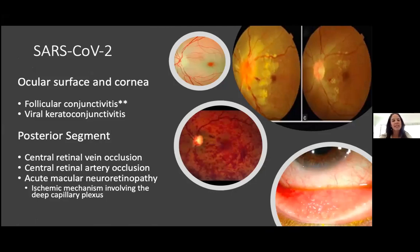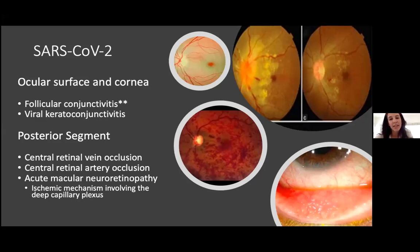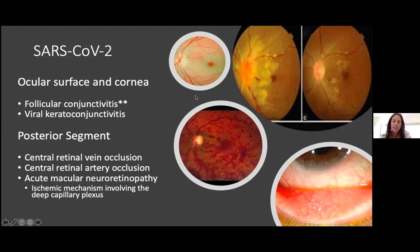Regarding COVID: very little is known about its ocular effects. Follicular conjunctivitis has been reported as the most common feature, with transmission thought to be through touching mucous membranes. Viral keratoconjunctivitis has also been described. In the posterior segment, it's more the thrombotic phenomena: central retinal vein occlusion giving a blood-and-thunder fundus, central retinal artery occlusion with a cherry-red spot, and acute macular neuroretinopathy — an ischemic change involving the deep capillary plexus of the retina, with an ischemic swollen disc and macular changes.